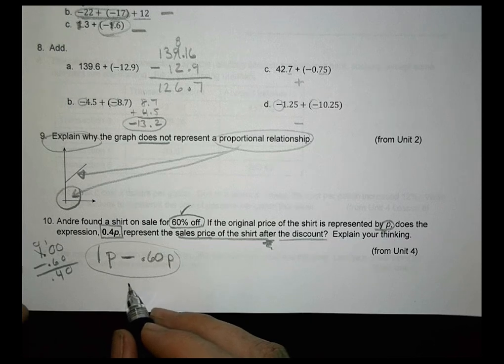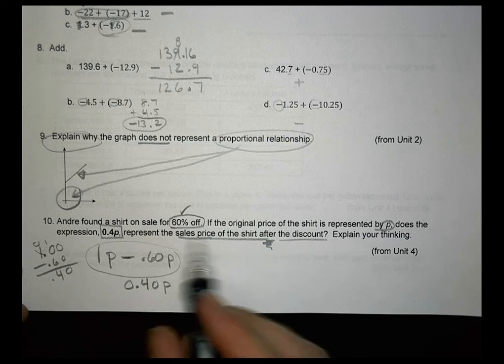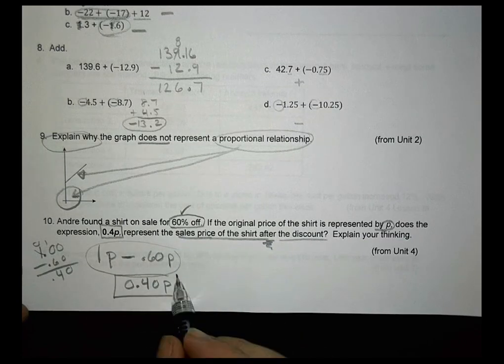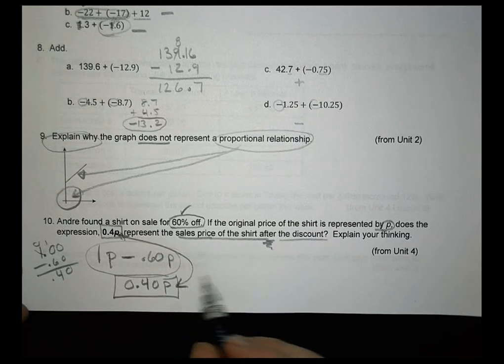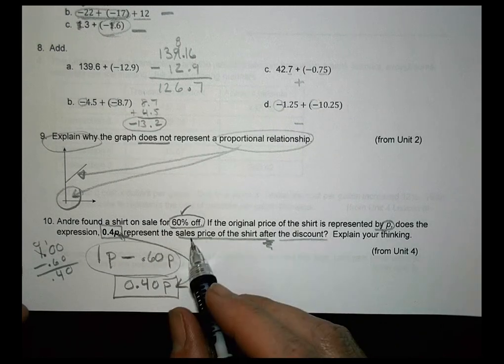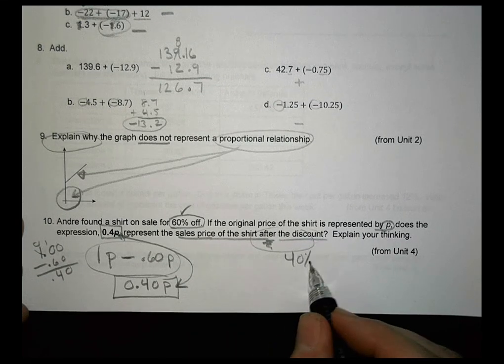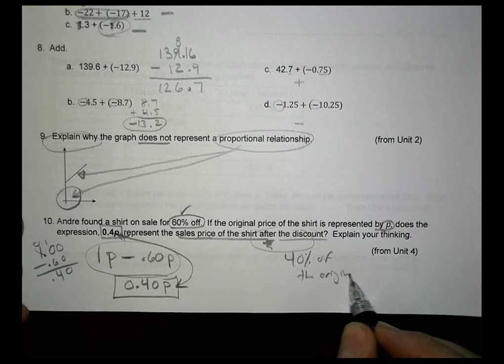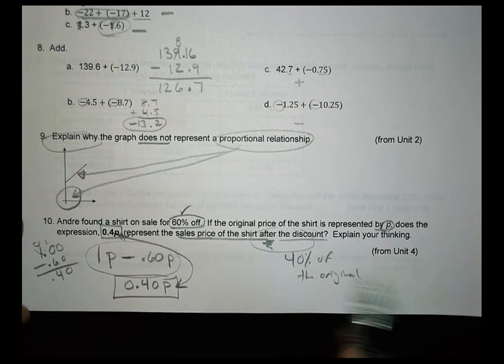Or I could just leave it as 0.4P. And that certainly matches there. So those are the same there. And the reason it works is because the cost for the sales price after the discount means I'm only going to pay 40% of the original price. And so I get the 40% by multiplying the price times 0.4.